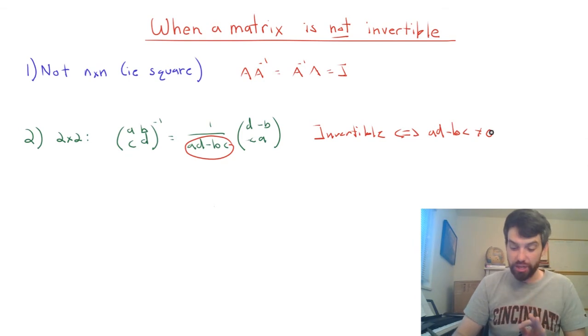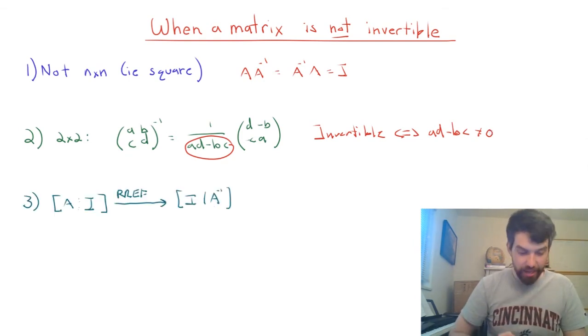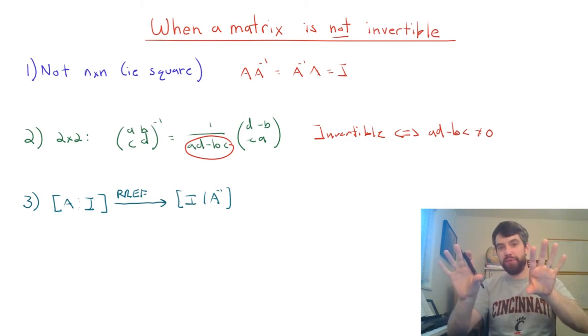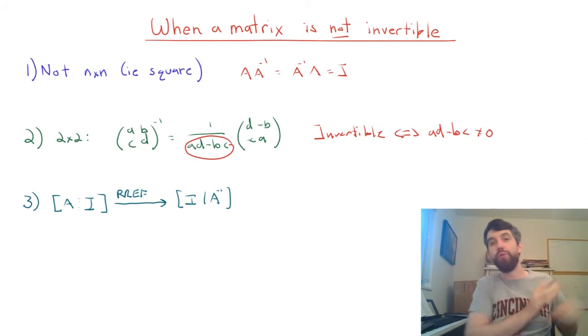Alright, so let's look into the bigger case next. You might recall that our method was this. You started with the matrix A, you append the identity matrix, and then you try to go and row reduce the entire thing.